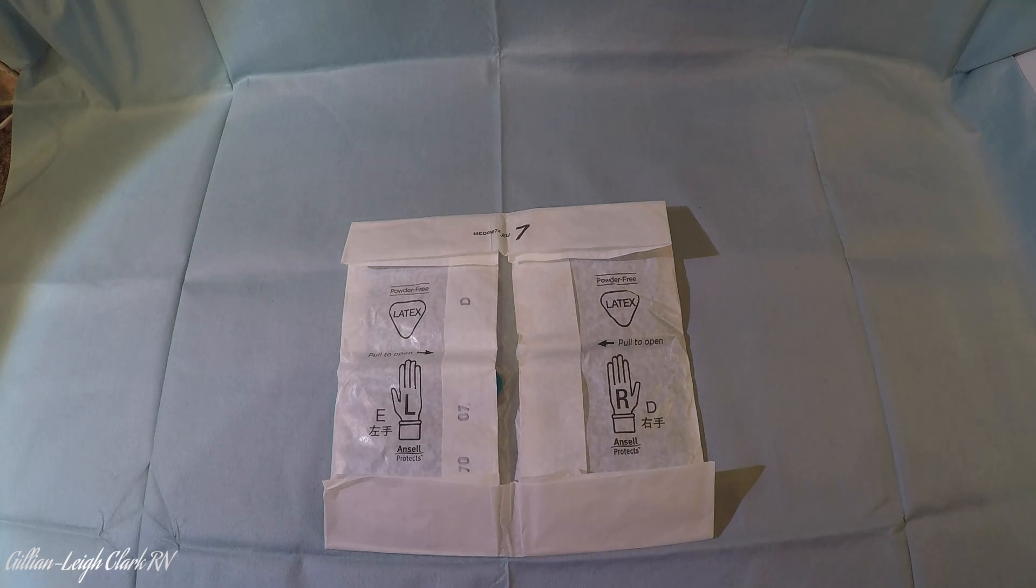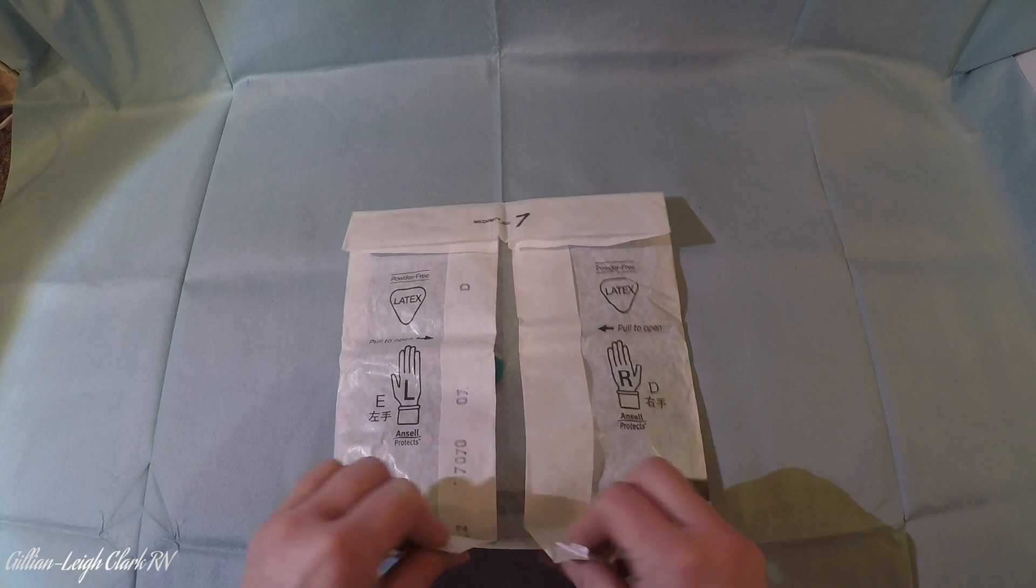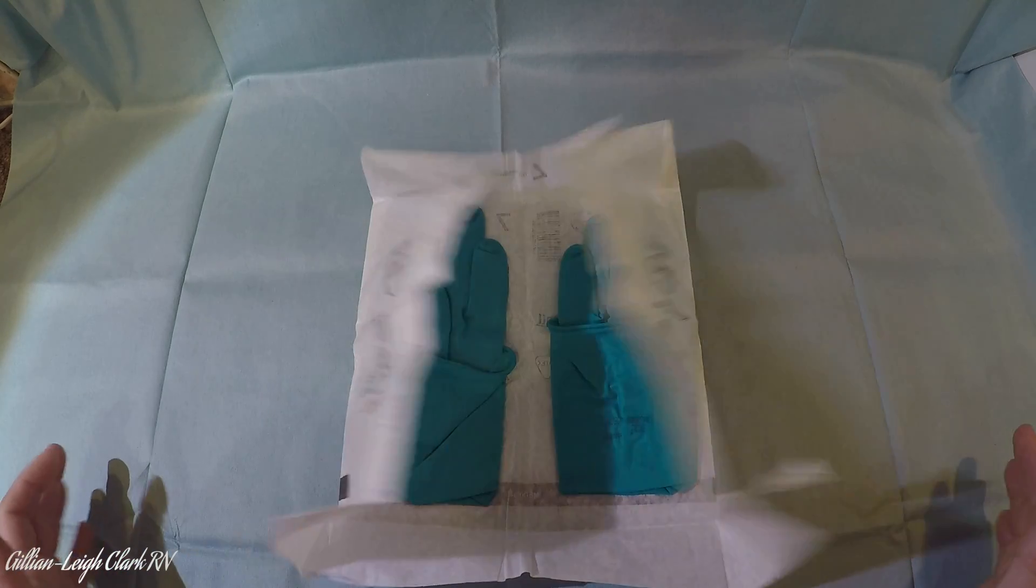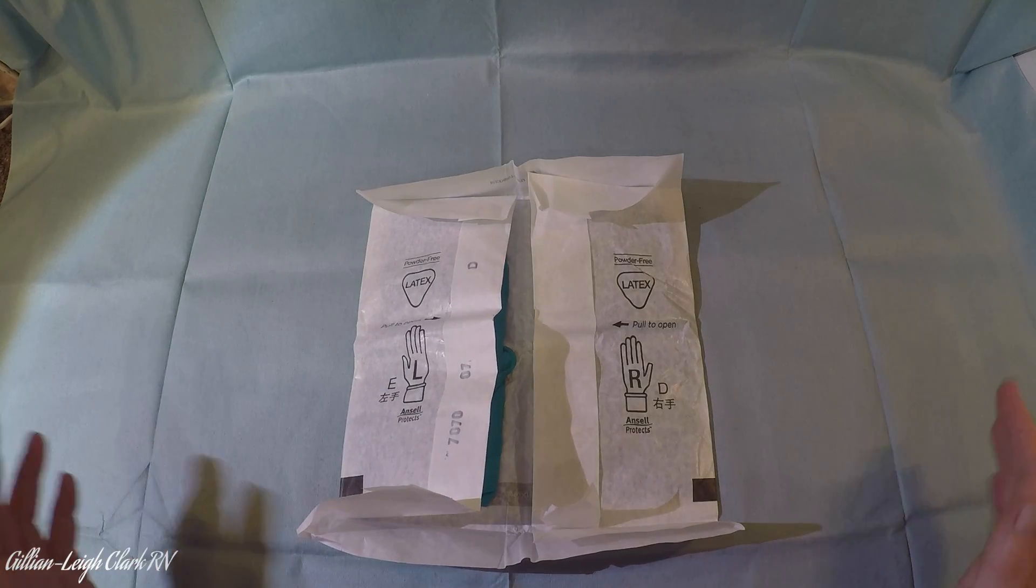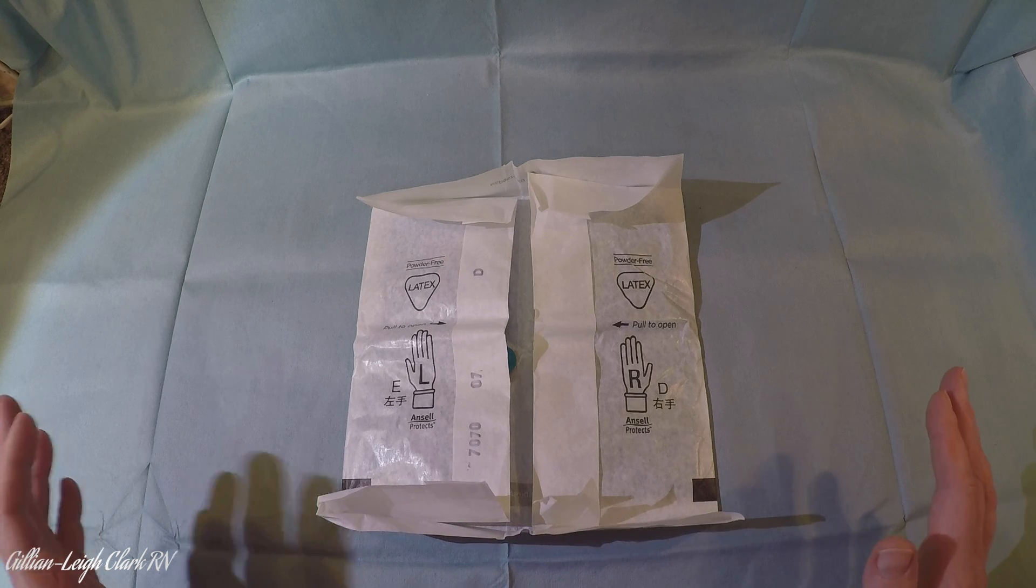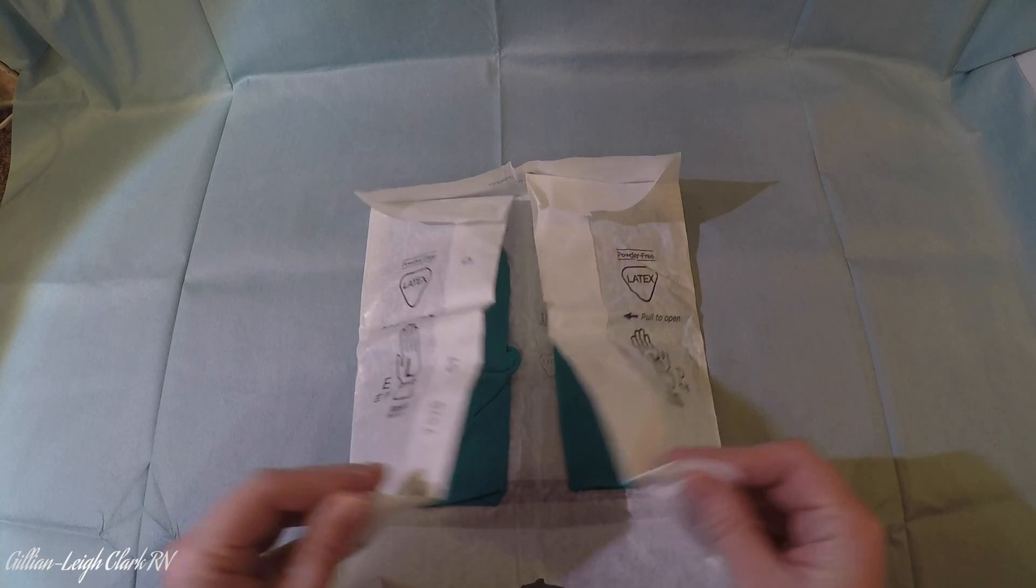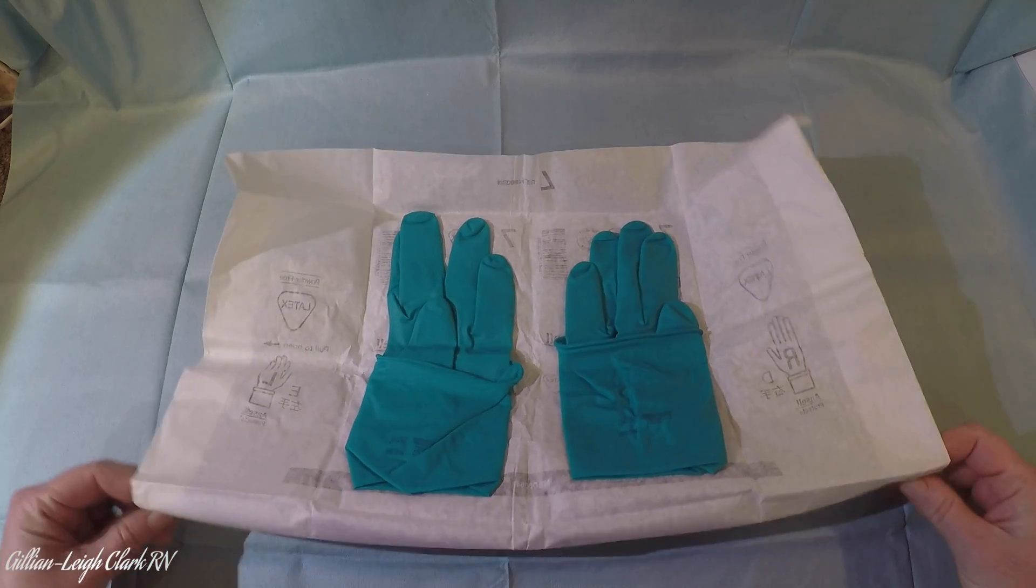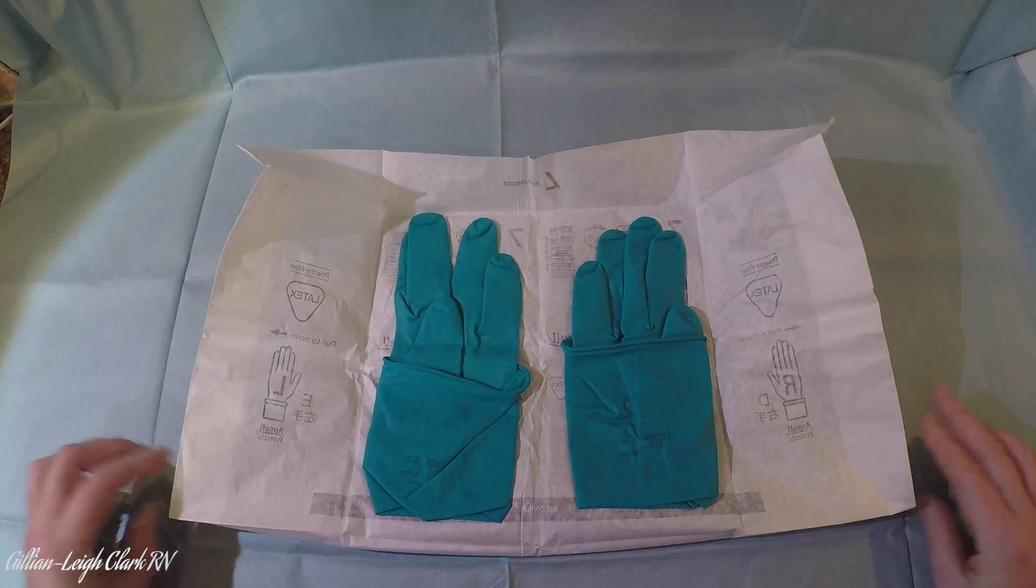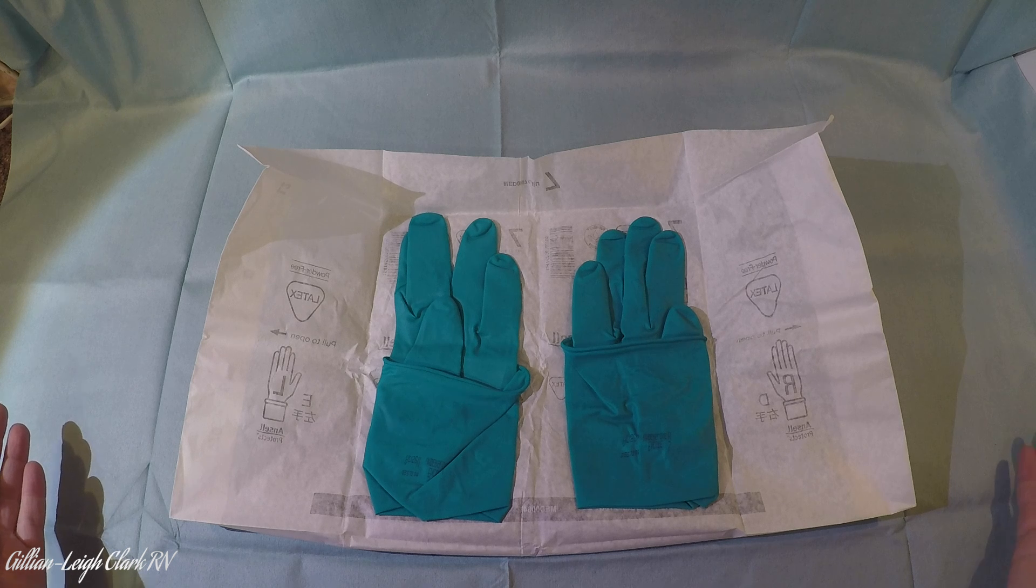If I was to open my packet in a normal way you might find that the packet naturally wants to come shut again so that's going to give you some issues when you're trying to get your sterile gloves onto your clean hands. So if when you open your packet you then turn the bottom edge under that holds your packet open so you're ready to go.